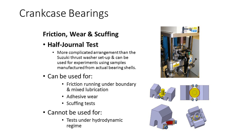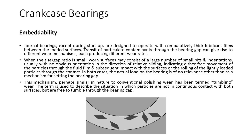The half-journal test geometry is a more complicated arrangement than the Suzuki thrust washer setup and can be used for experiments using samples manufactured from actual bearing shells. This arrangement can be used for friction running under boundary or mixed lubrication, adhesive wear and scuffing tests. Despite the potential for rotating at high speeds, this geometry cannot be used for tests under hydrodynamic regimes because it is not possible to duplicate the necessary lubricant entrainment conditions associated with the full journal bearing. Journal bearings, except during start-up, are essentially designed to operate with comparatively thick lubricant films between the loaded surfaces.